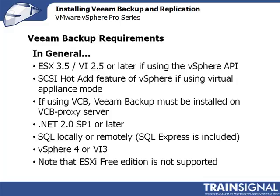Now let's talk about the Veeam Backup requirements. In general, you need ESX 3.5 or Virtual Infrastructure 2.5 or later to use the vStorage API. For SCSI Hot Add when using Virtual Appliance mode, you need a version of vSphere that supports SCSI Hot Add — available in most vSphere editions except the very bottom tiers. If using VCB, Veeam Backup must be installed on the VCB proxy server. You'll need .NET 2.0 Service Pack 1 or later, SQL locally or remote (SQL Express is included), and either vSphere 4 or VI3. vCenter is optional but highly recommended. Note that ESXi Free Edition is not supported.